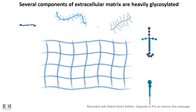One of the important structures in terms of tissue is the extracellular matrix. Several extracellular matrix components, such as fibrinogen, fibronectin, collagen, etc., are heavily glycosylated. And that kind of determines how rigid the extracellular matrix would be, which could be very relevant in terms of the biological property of the extracellular matrix.